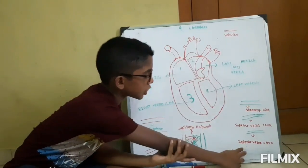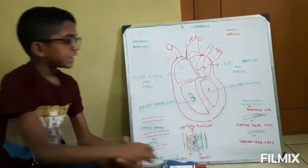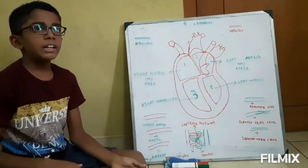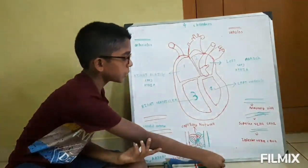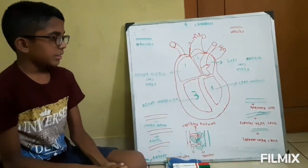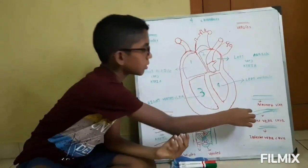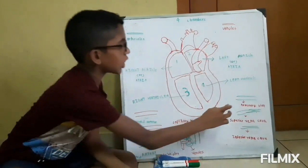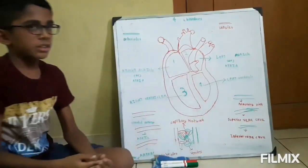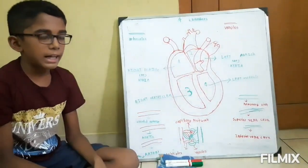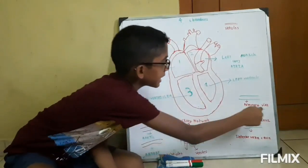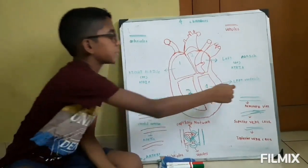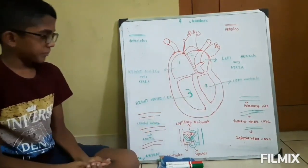The second type is called Inferior Vein, whose main job is to take the impure blood from the lower portion of the human body and give it to the human heart. The third type is called Pulmonary Veins. We all know that veins carry impure blood, but this Pulmonary Vein alone takes pure blood from the lungs to the human heart.